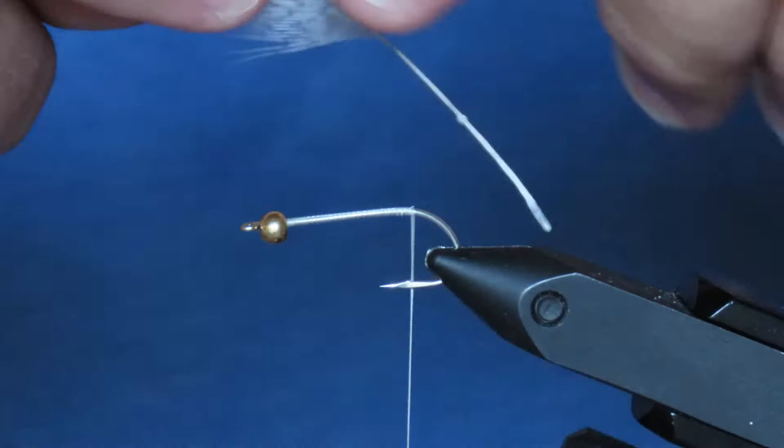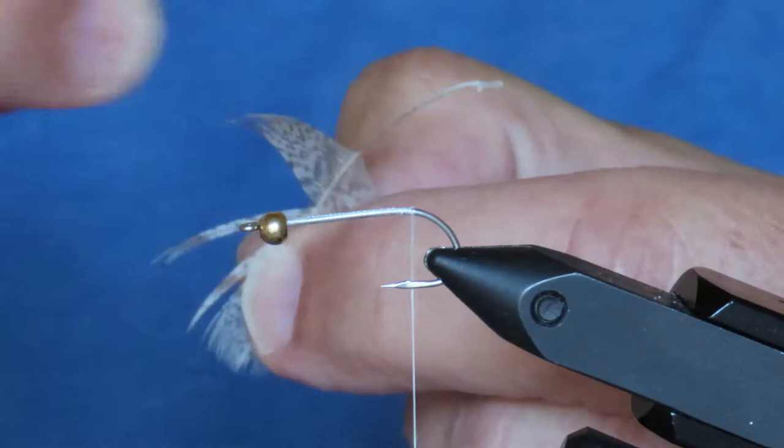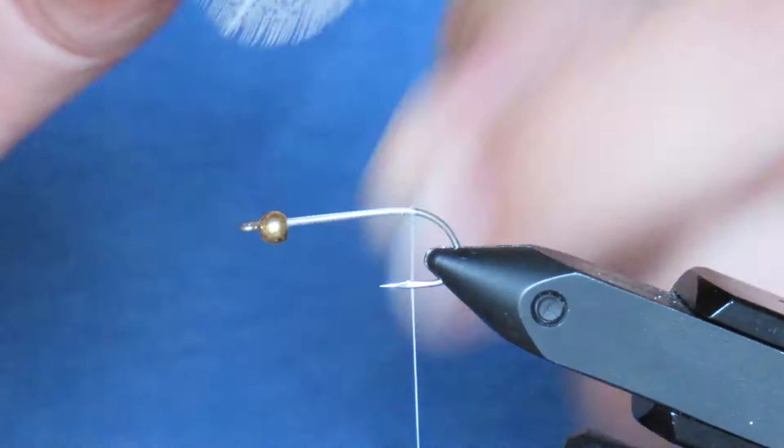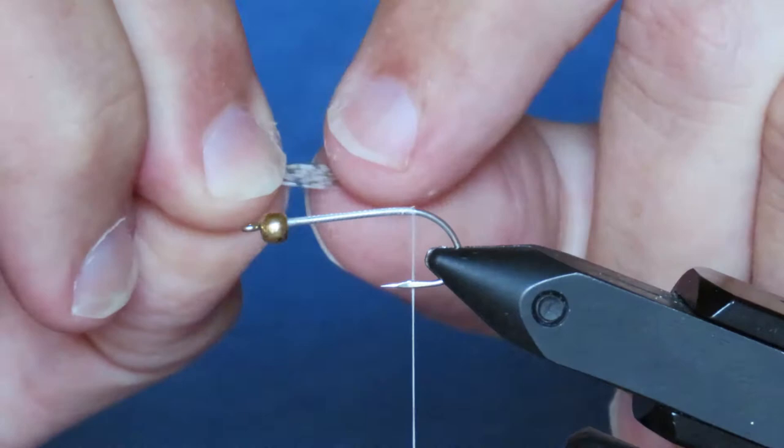Now here's the feather I've selected for the tail, which has some nice black and white mottling on it. I'm going to just bring up some of the fibers 90 degrees from the stem, and then even up the tips, like so, and just break them away.